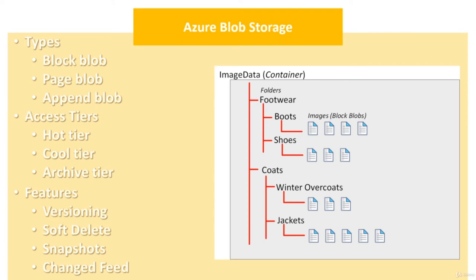Blobs can be stored inside containers, which imitate a hierarchy of folders, and you can control read and write access at the container level. Azure provides three access tiers: Hot for frequently accessed blobs with millisecond latency; Cool, cheaper than Hot, for infrequently accessed blobs also with millisecond latency; and Archive, the least expensive with larger latency up to hours, for historical data rarely accessed. Lifecycle management policies can automatically move blobs from hot to cool and then to archive based on days of modification.